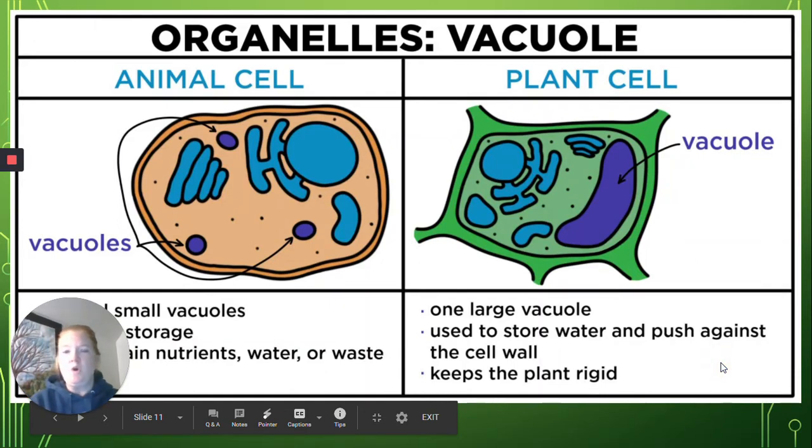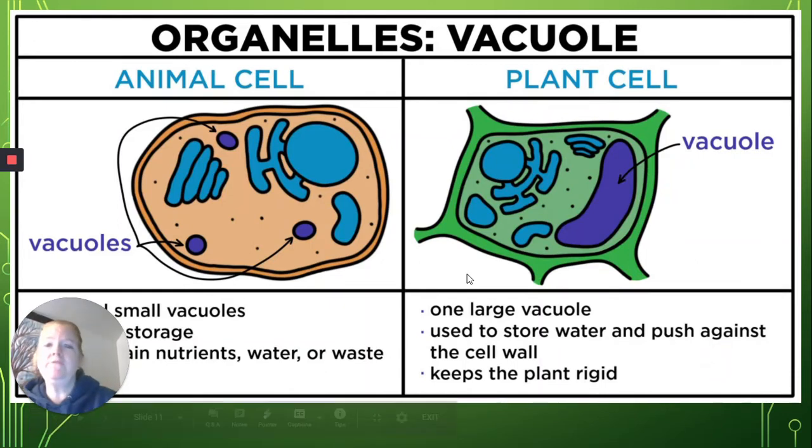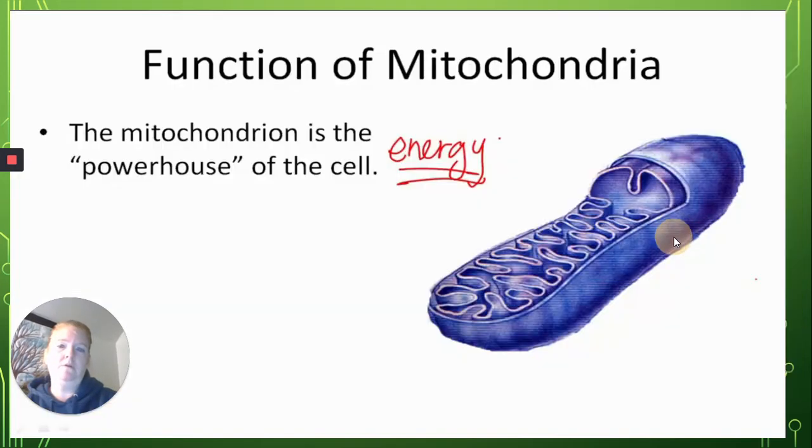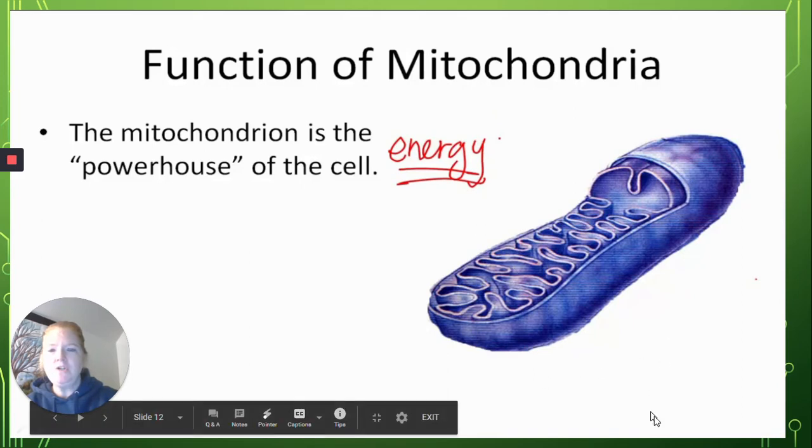All right. So we mentioned vacuole. The difference between animal cells and plant cells in terms of vacuole is a plant cell tends to have a very large vacuole to push against that cell wall and keep the structure of the plant cell. Animal cells tend to have smaller, more numerous vacuoles. And again, the mitochondria, a bean-like structure, is considered the powerhouse of the cell for producing the energy or ATP.